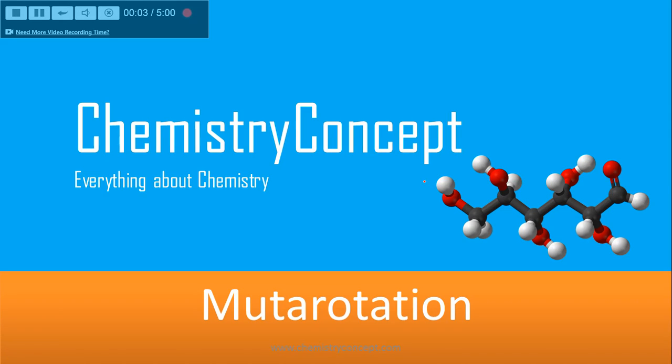Welcome to Chemistry Concept. Let's discuss mutarotation. What is mutarotation? Let's say we have alpha-D-glucose, and there is an observation when alpha-D-glucose is dissolved in water, that is, aqueous solution is left in water.